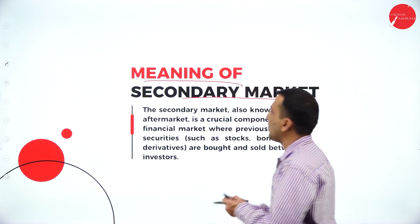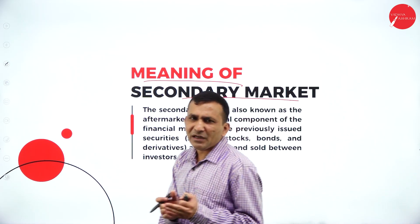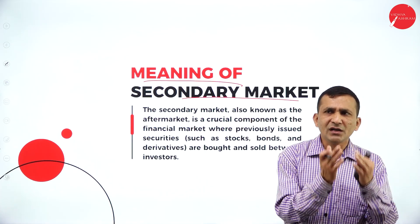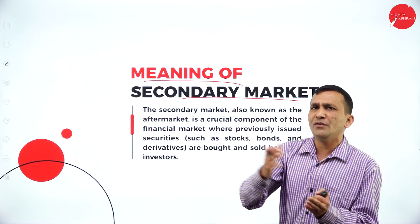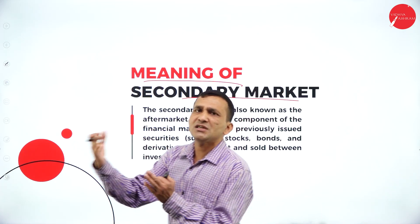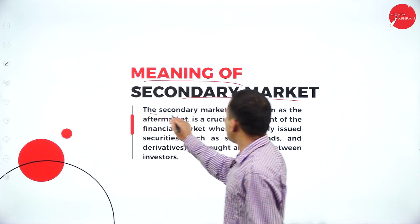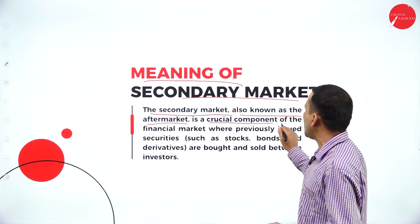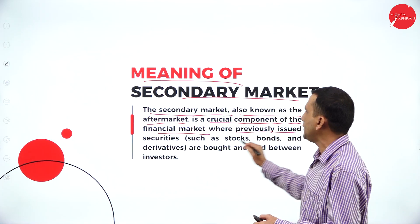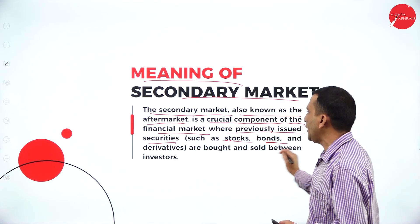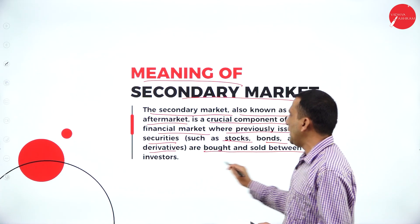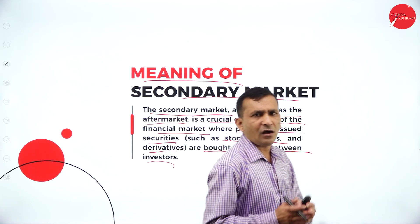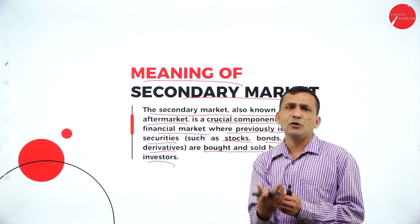Next: meaning of secondary market. Whatever was studied for the primary market, now we are getting more clarity about the secondary market — which is always after the first-time issuance, going in between the seller, the investors, and institutions or companies. The secondary market, also known as the after market, is a crucial component of the financial market where previously issued securities such as stocks, bonds, and derivatives are bought and sold between investors. You can hold for one week, intraday, or delivery trade, and easily go for selling.